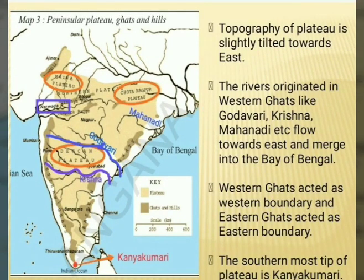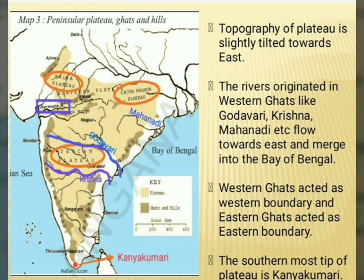The topography of the Plateau is slightly tilted towards east. The rivers originating in the Western Ghats, like Godavari, Krishna, Mahanadi, etc., flow towards east and merge into the Bay of Bengal. Western Ghats act as a western boundary and Eastern Ghats act as an eastern boundary. The southernmost tip of the plateau is Kanyakumari.